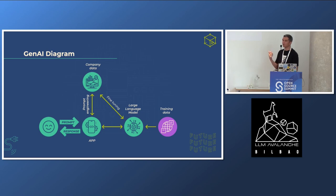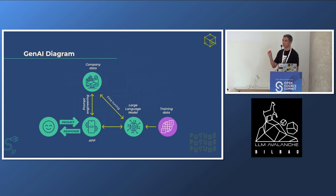Besides using training data, you can also do some fine-tuning to adapt this large language model to specific use cases — for example, generating programming language code, a question-and-answer chat style, medical research, or other topics. Another form of enhancing this is by using Prompt Engineering or RAG, where you can use live documents or live data. When you use a prompt, it will seek something more recent or more precise using embedding, working with the large language model to return a result that's much more precise. This is the basic diagram for generative AI.